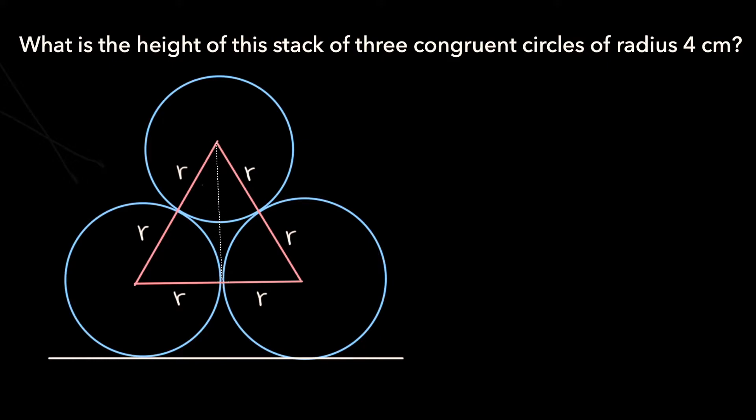Notice that the height of this triangle is one of the components in the height of the entire figure. The other two components are this segment and this segment, both of which are the radius of the circles, which the problem tells us is of length 4. So now essentially what this problem boils down to is determining the length of this third component, which is the height of this equilateral triangle.